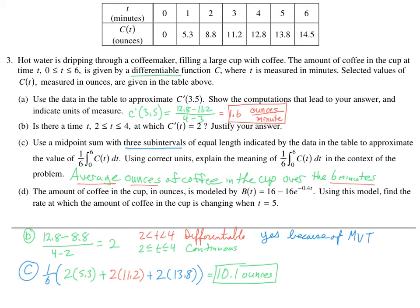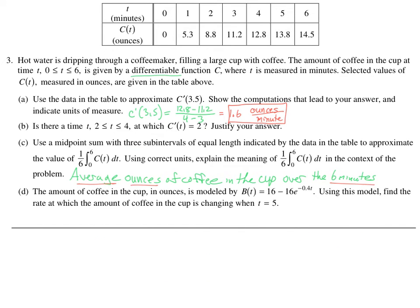All right. D kind of brings in a whole brand new thing on the problem. The amount of coffee in the cup in ounces is modeled by this. Instead of a table, we now have an equation. These are not the same. This is C. This is B. A whole different scenario. It has basically nothing to do with it. Using this model, find the rate at which the amount of coffee in the cup is changing at T equals five. So you want the amount. Oh, no, no. Be careful. The rate at which the amount of coffee is changing.